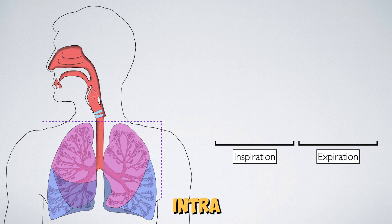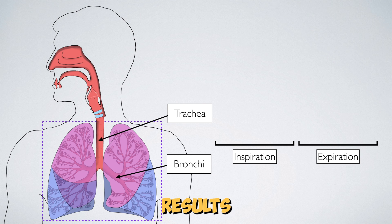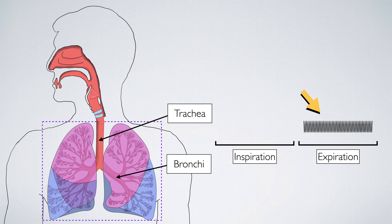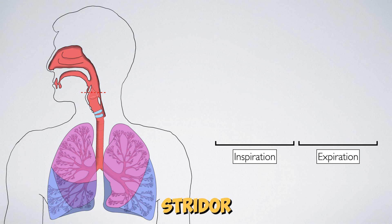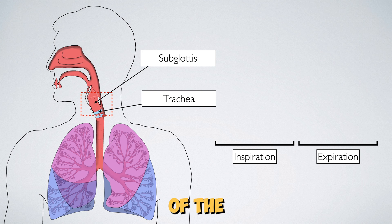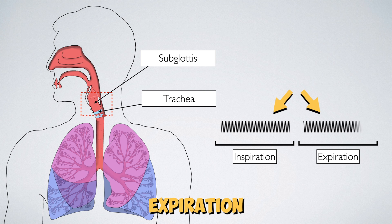Obstruction of the intrathoracic airway, such as the lower portion of the trachea or the bronchi, results in a stridor during expiration. Biphasic stridor is produced by severe obstruction just below the level of the vocal cords. This type of stridor occurs both in inspiration and expiration.